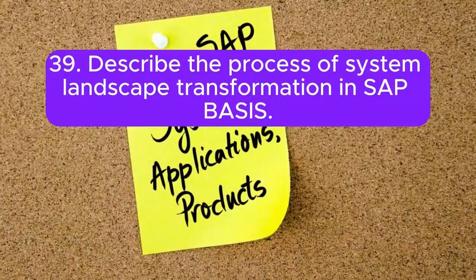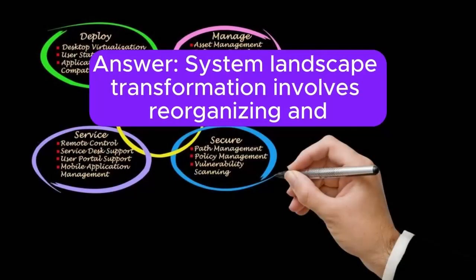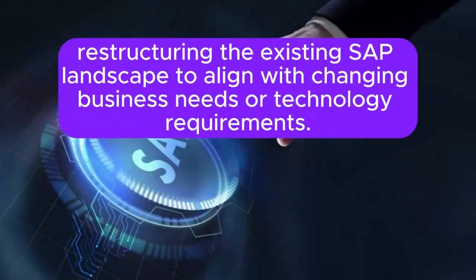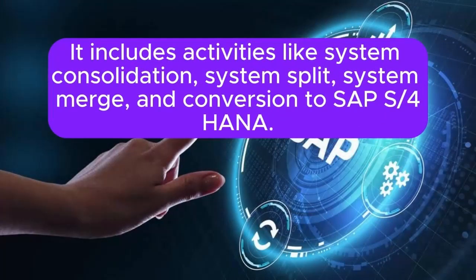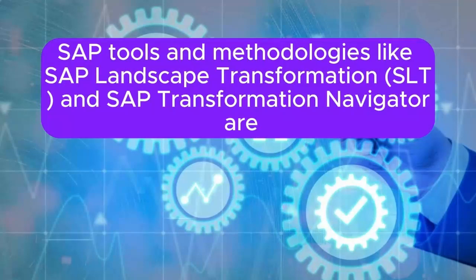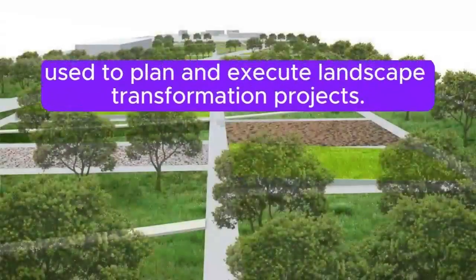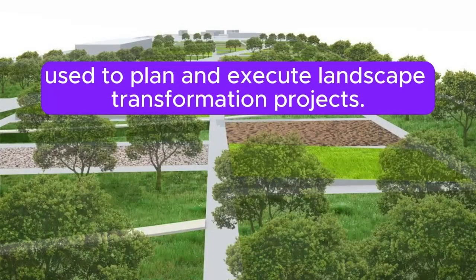Question 39: Describe the process of system landscape transformation in SAP BASIS. System landscape transformation involves reorganizing and restructuring the existing SAP landscape to align with changing business needs or technology requirements. It includes activities like system consolidation, system split, system merge, and conversion to SAP S/4HANA. SAP tools like SAP Landscape Transformation (SLT) and SAP Transformation Navigator are used to plan and execute landscape transformation projects.